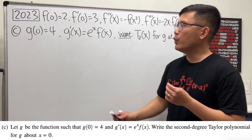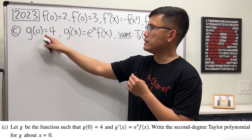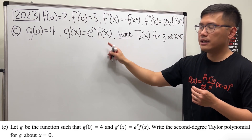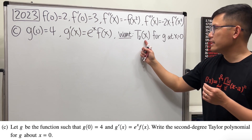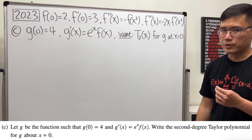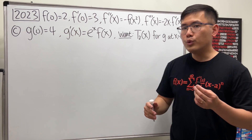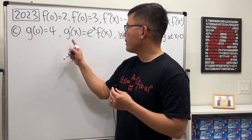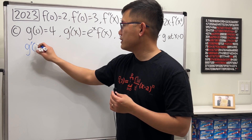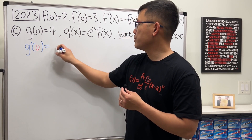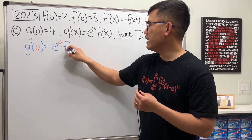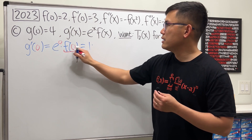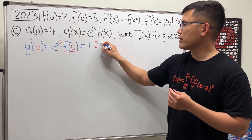Now for part C. We are given another function g, where g of 0 equals 4 and g prime of x equals e to the x times f of x. We need to find the second degree Taylor polynomial for g at x equals 0. First we need the derivatives of g at 0. g prime of 0 is e to the 0 times f of 0, which is 1 times 2, so that equals 2.